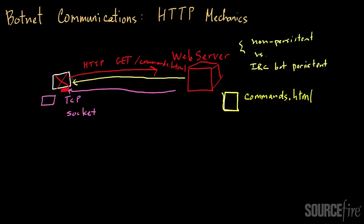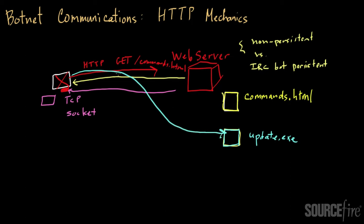The CNC server can also host an executable file instead of a commands HTML file — for example, an update file for the bot, such as update.exe. As part of the commands, the bot can be instructed to fetch a copy of update.exe, download it, execute it, and update itself. There are different types of files a CNC server can provide back to a bot-infected host via HTTP.